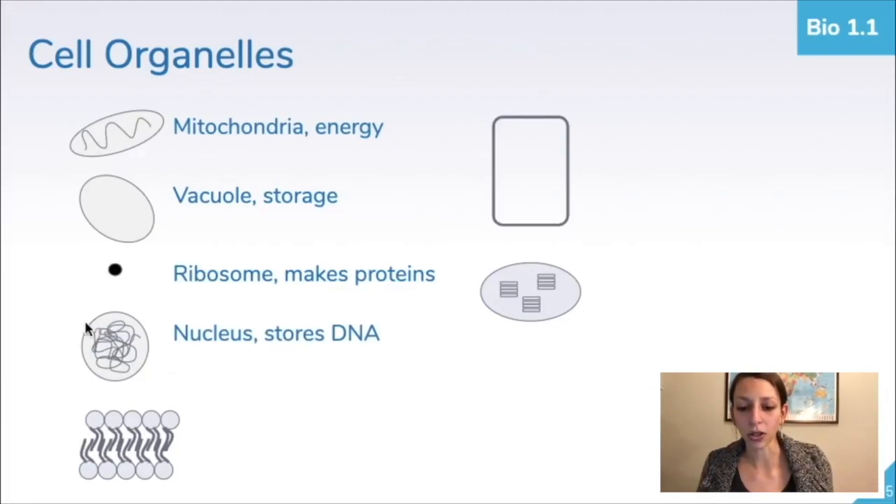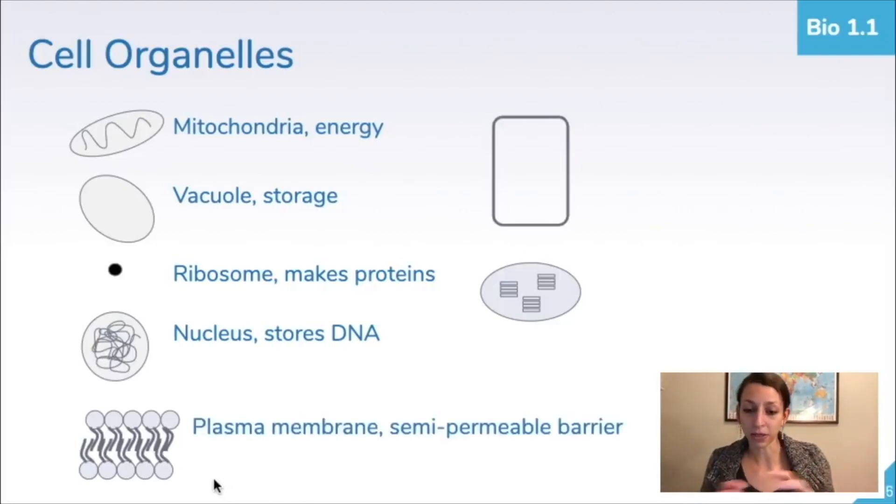Our ribosomes are represented by little dots, and this is where proteins are made. Our nucleus is going to be in the center of the cell. Sometimes you'll see chromosomes if the DNA is condensed represented in them, but it's going to store our DNA or our genetic information in eukaryotic organisms. Our cell membrane is going to be represented, if we zoom in closely, by this phospholipid bilayer, and its purpose is to provide a semi-permeable barrier, letting some things in and some things out of the cell in order for the cell to maintain homeostasis and do everything that it needs to do.